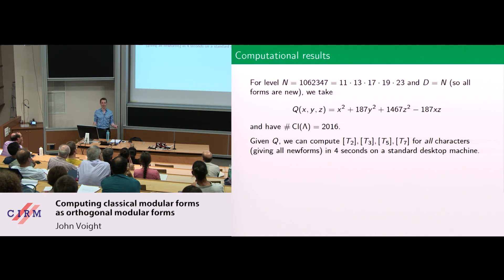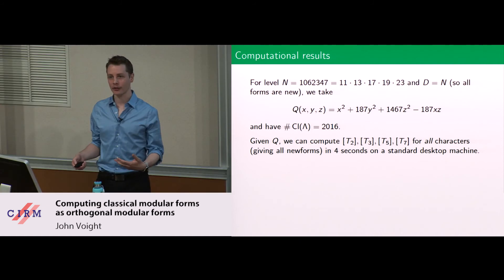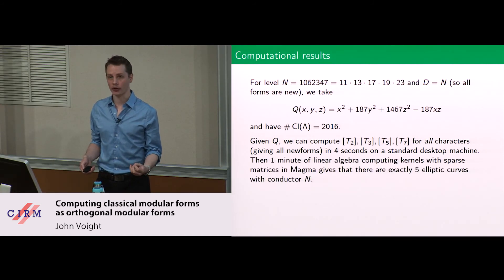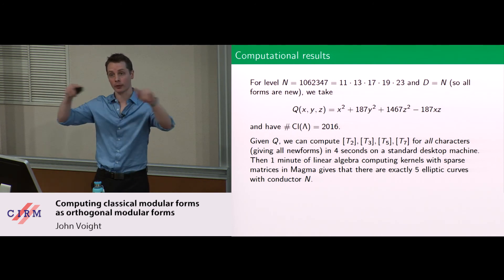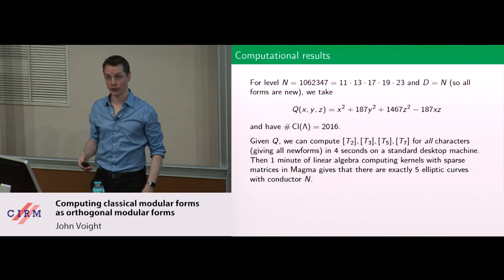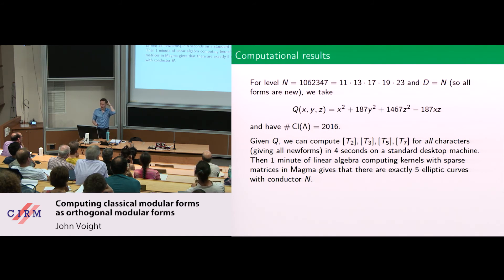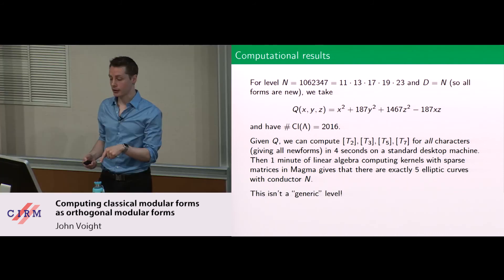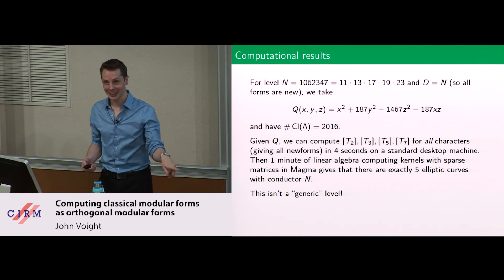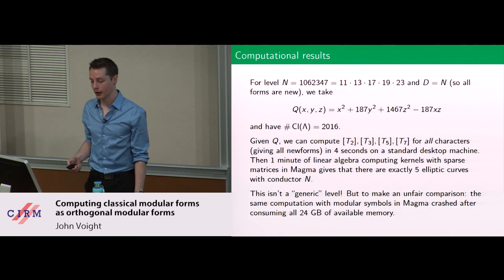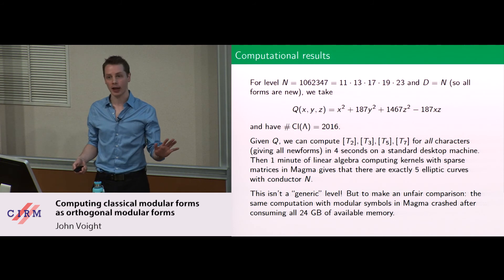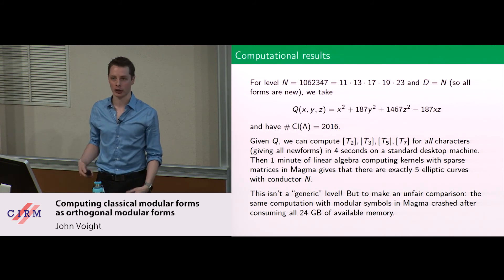This is what Birch meant when he says you can generate interesting numbers much faster than you can read them. The natural thing to do is take the eigenforms with rational Hecke eigenvalues. We found those using linear algebra — these matrices are incredibly sparse, with p+1 elements per row in a 2000-by-2000 matrix, so you can use sparse linear algebra. The best implementation we found is in Magma. In a minute you can find there are exactly five elliptic curves with conductor N. To make a totally unfair comparison to modular symbols or Sage — if you try to plug in this level for weight two, it just crashes, eating all memory with no output.